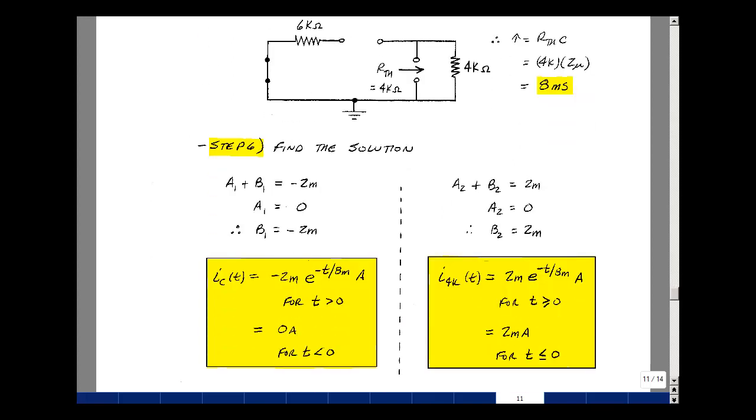Step six is to put it all together. A1 plus B1 was minus 2 milli. A1 was zero. B1 is equal to minus 2 milli. I sub c is zero minus 2 milli times e to the minus t over tau, which was 8 milliseconds. And the units are amps. You can put the milli here, you can put the milli over here. We did find that that current was zero for t less than zero, so we have a discontinuity. We don't have the equality here. We just have greater than zero and less than zero. And the capacitor current can change instantaneously. What can't change instantaneously is the capacitor voltage.